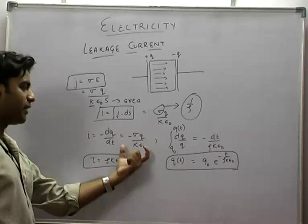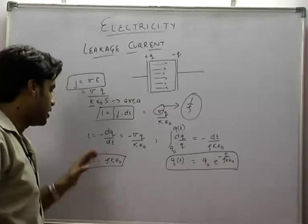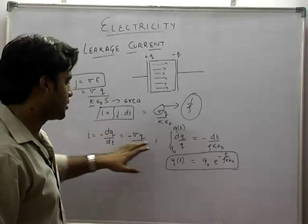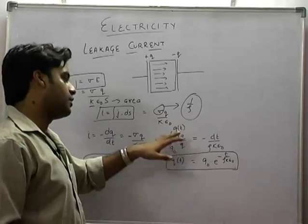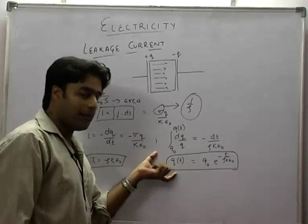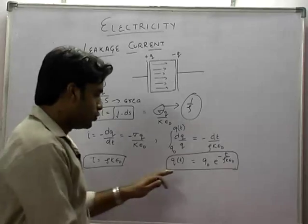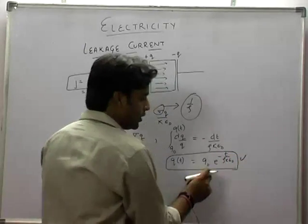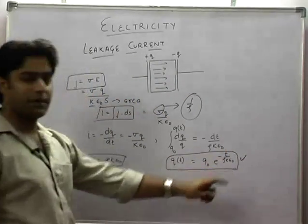Which will be equal to minus sigma Q upon K epsilon. Now, I can say DQ by DT. So I can integrate it from Q naught, which was initial charge, to Qt at any time. So we integrate it. Our formula will come: Qt will be equal to Q naught into E raised to the power minus T by rho K epsilon.